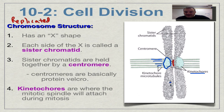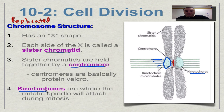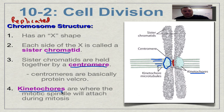To summarize: half the X is called a chromatid, chromatids are held together by centromeres, kinetochores are on the outside, and they're used to split apart the centromere at a later point in the process.